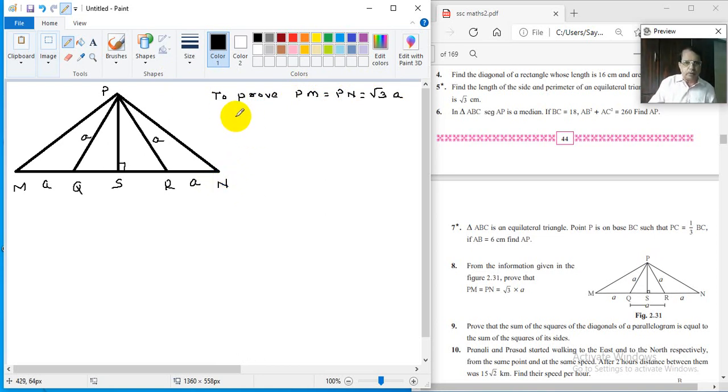We have to prove that PM is equal to PN, is equal to root 3 into A. This is asked. So now what can be done? Proof. Very simple.